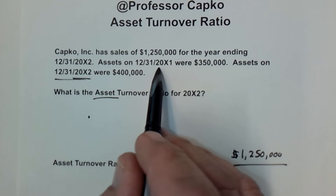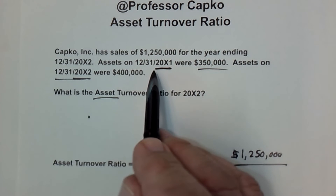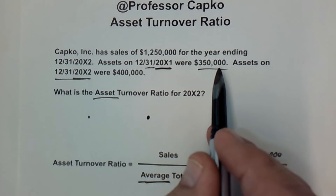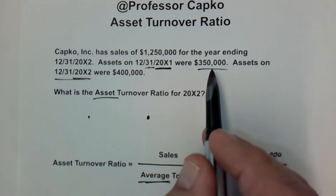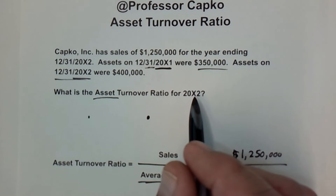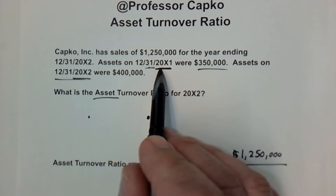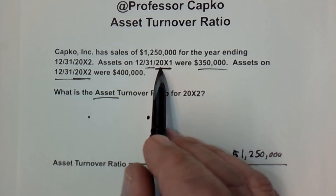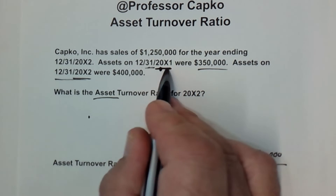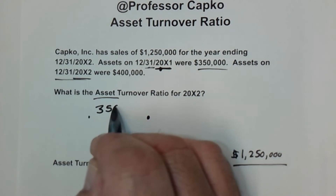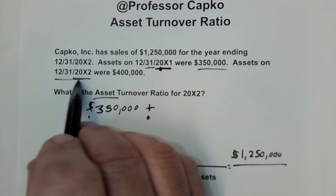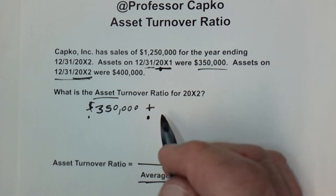We're not directly told the beginning-of-year assets, but we do have the end of the prior year's assets. Since that is the assets as of 12/31 — New Year's Eve — the assets are the same for accounting purposes on January 1st of 20x2. So our beginning-of-year assets for 20x2 is the end of the prior year's assets: $350,000. We add that to the end-of-year assets for 20x2, which is $400,000.